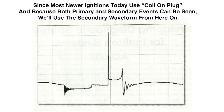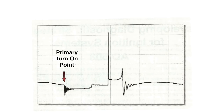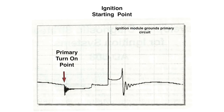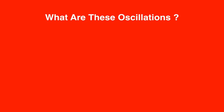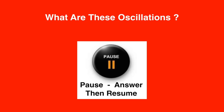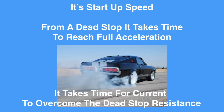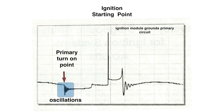We have the primary turn-on point — that's the ignition starting point. The ignition module grounds the primary circuit. The coil is a load; it has voltage, so when it gets ground you should see the voltage drop — it's being turned on. Then you'll see oscillations. Oscillations are startup speed — from a dead stop it takes time to reach full acceleration. It takes time for current to overcome the dead-stop resistance in a circuit. The ignition module grounds the primary circuit and we see the oscillations.